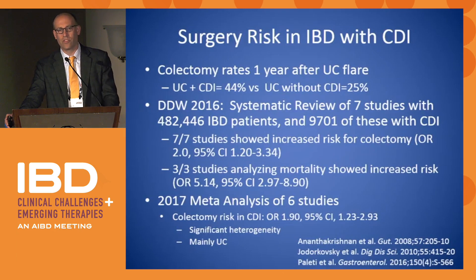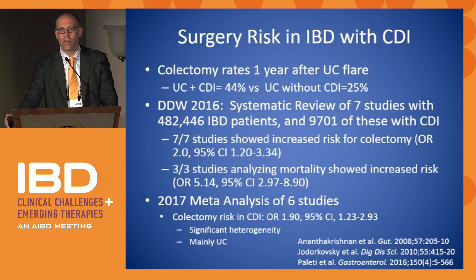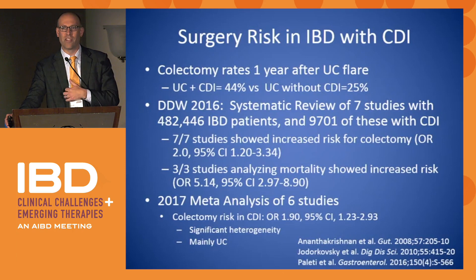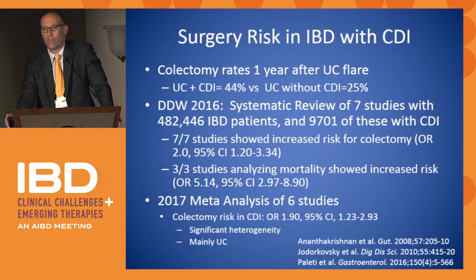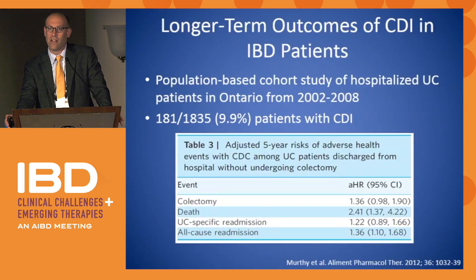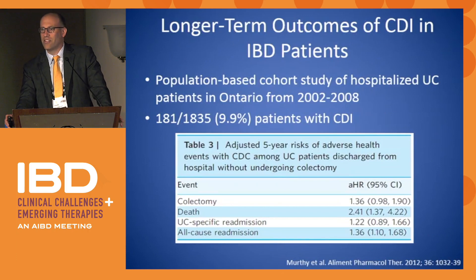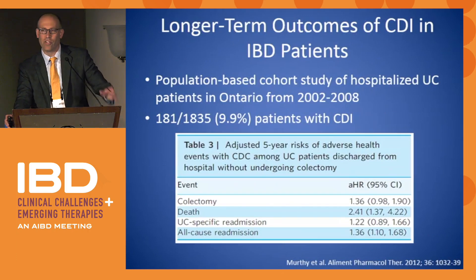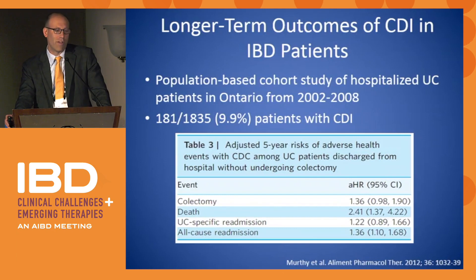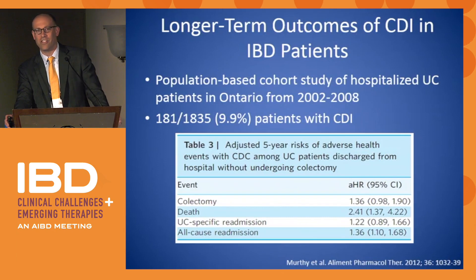C. diff in IBD has worse outcomes. Specifically looking at surgery, one study from the Mass General database showed one-year colectomy rates comparing C. diff in UC versus UC alone. The C. diff in UC patients had a 44% colectomy rate at one year versus 25% in C. diff alone. Two different meta-analyses show pretty much a two-fold increased risk of surgery when you have C. diff with UC versus UC alone. On mortality, a prospective cohort study out of Canada looked at about 1,800 hospitalized IBD patients — 10% had C. diff — with a five-year adjusted mortality hazard ratio of 2.41. So C. diff means higher recurrence rates, higher colectomy rates, and possibly higher mortality rates.